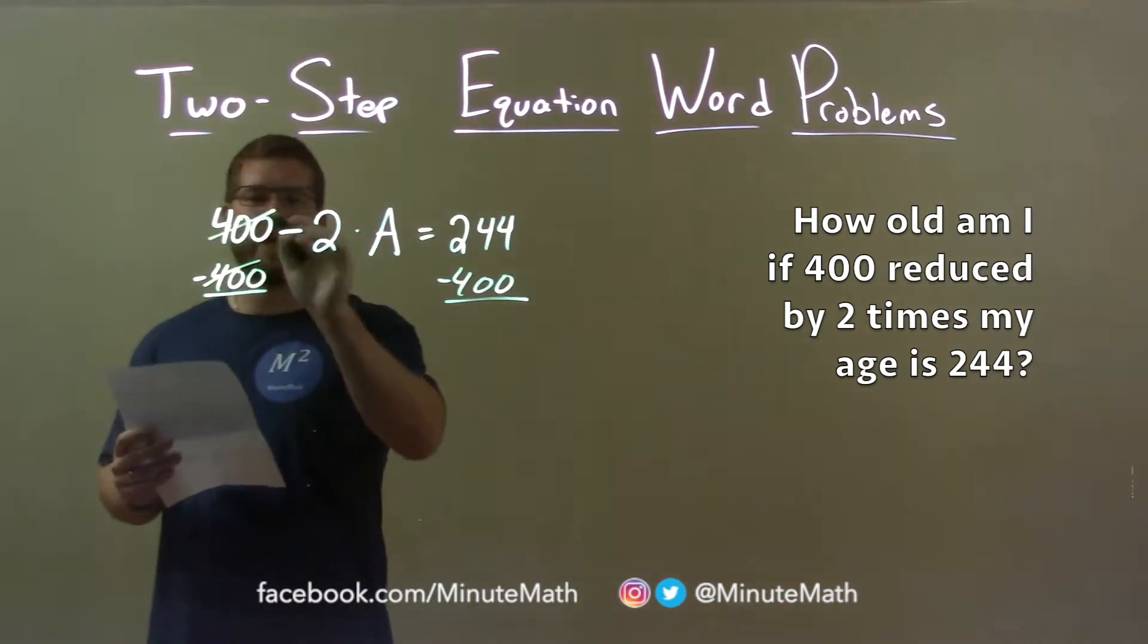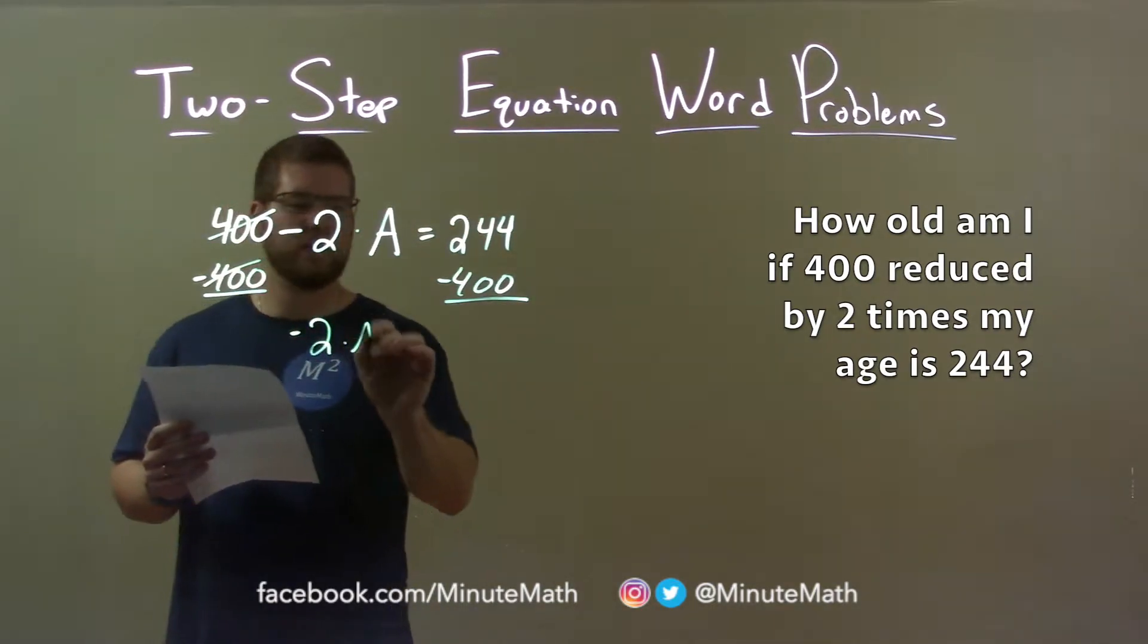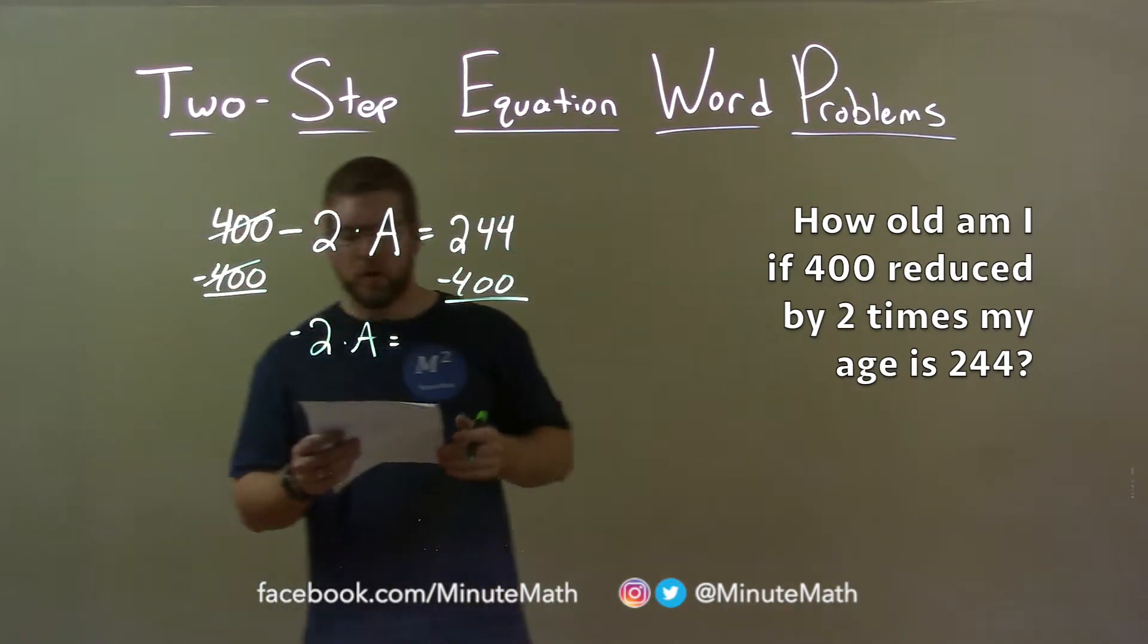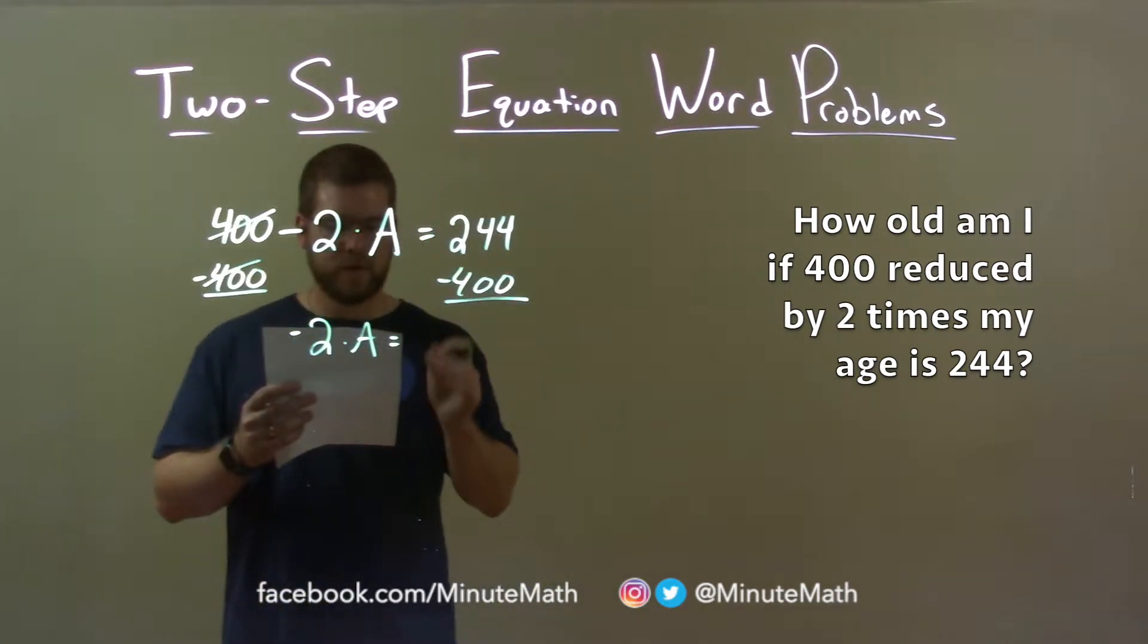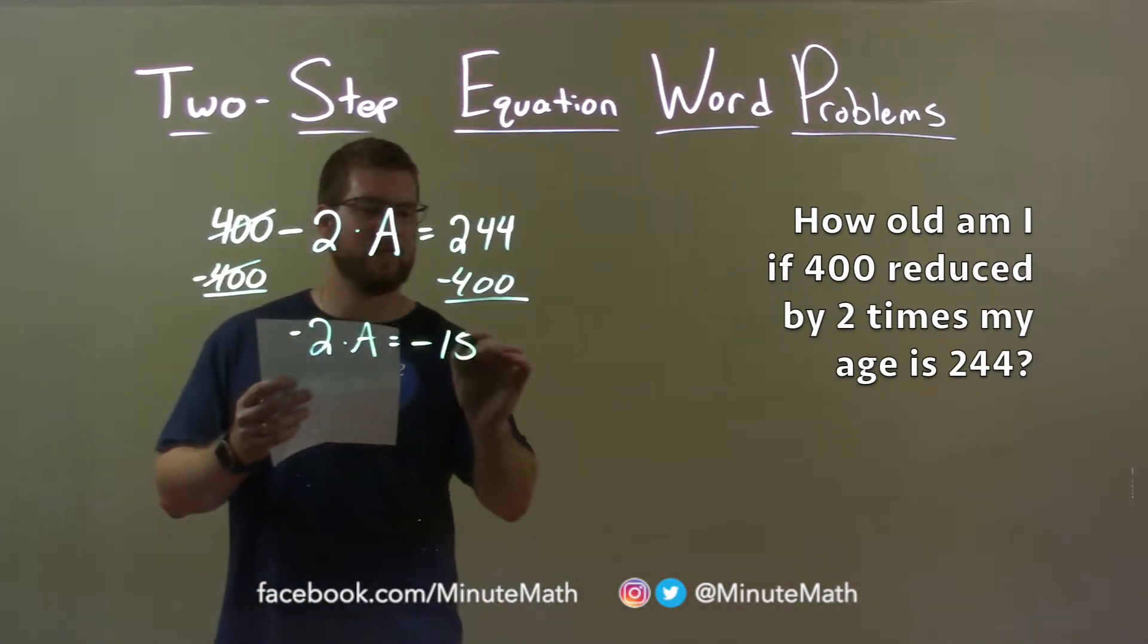The 400s will cancel and I'm left with negative 2 times A on the left. Now 244 minus 400 comes out to be negative 156.